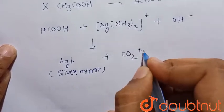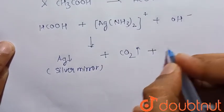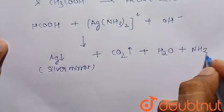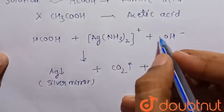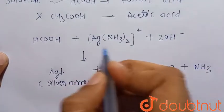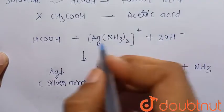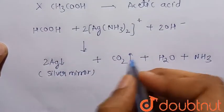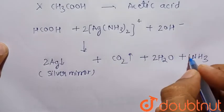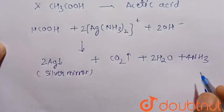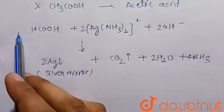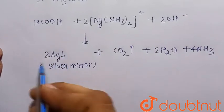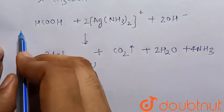The side products are also formed: CO₂ gas, water, and ammonia. Now we have to balance this equation. There should be 2 to neutralize the two negative charges, and the coefficients should be balanced accordingly. This is the complete balanced equation of the Tollens' test for formic acid.